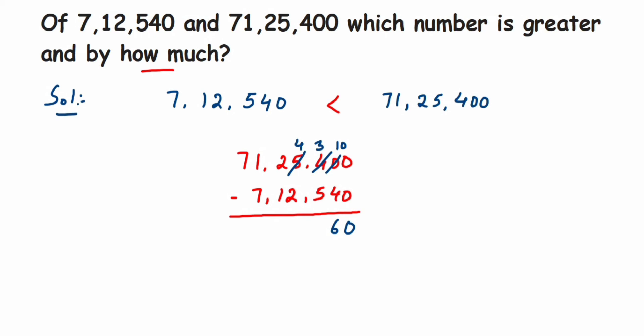The next 4 minus 2 is 2, and then 2 minus 1 is 1. Again, 1 minus 7 we cannot do, so this will be 6 and this will be 11. 11 minus 7 is 4, so we will get 4 and here 6. So the difference between these two numbers is 64,12,860.